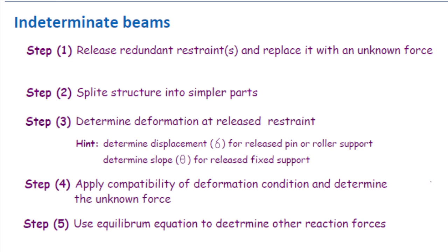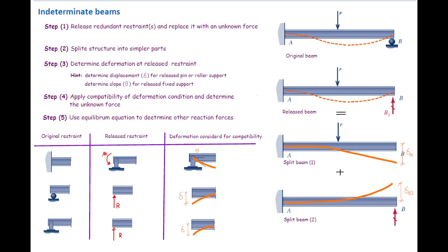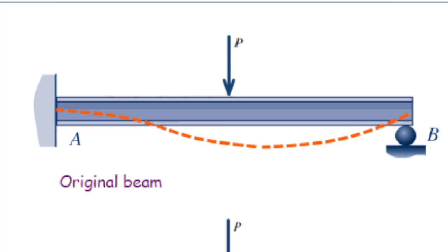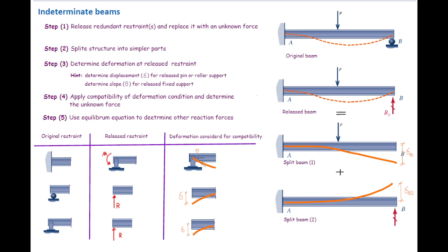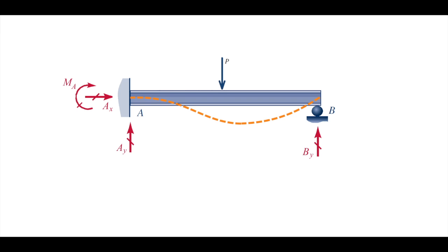Those are the five steps to solve indeterminate beams. Now let me solve this problem using another method. In step one, we release a redundant reaction support. I previously said the redundant reaction is B-y on the right side, but technically we can consider any one of the four reactions as the redundant. For instance, A-x is already zero since there is no force in the X direction, so it doesn't give an extra equation. But we can release B-y, A-y, or M-A.